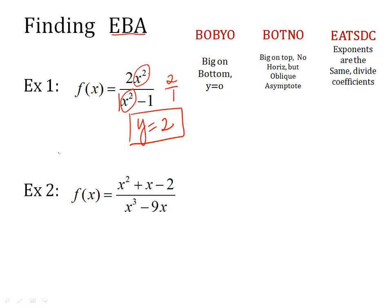Look at this one. BOBYO BOTNO EATSDC. Look what's happening. Where's my highest exponent here? It's a 2. Highest exponent on the bottom is a 3. So it's bigger on bottom. So that's BOBYO. Big on bottom. Then it's a y equals 0 horizontal. So BOBYO is a horizontal asymptote. EATSDC is a horizontal. And BOTNO is oblique or slant. And I'll show you how to do that.